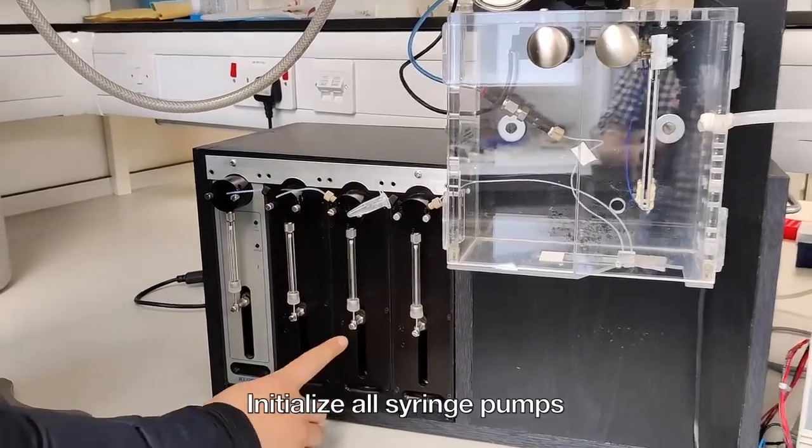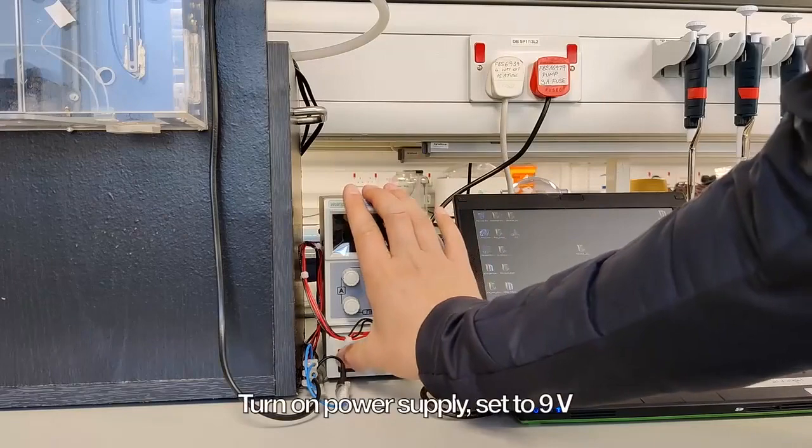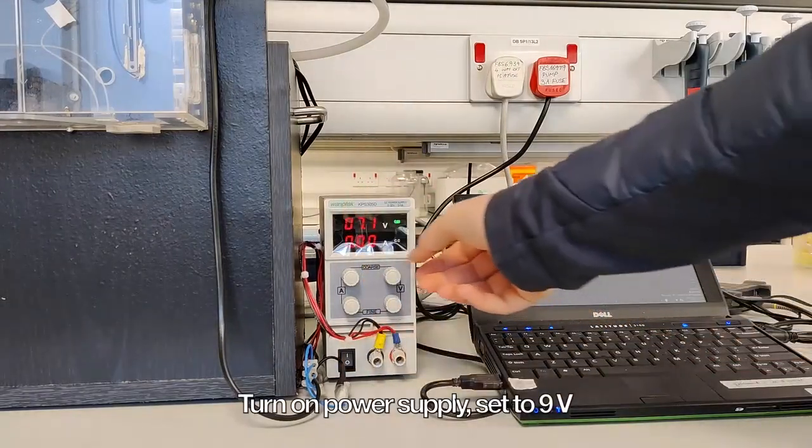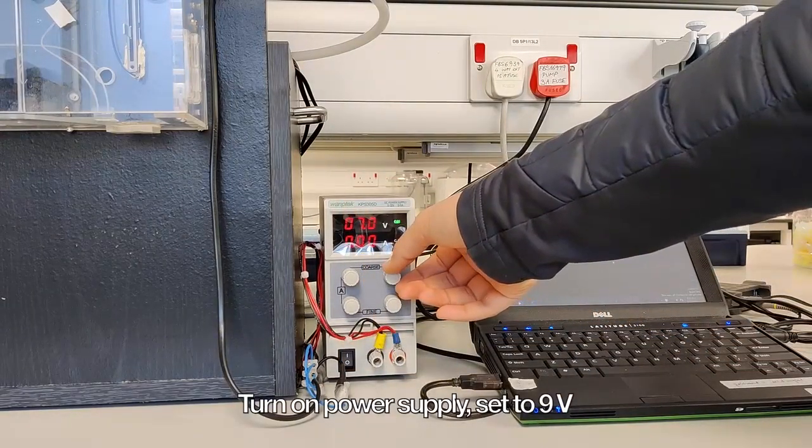Initialize all syringe pumps by pressing the initialize button on each syringe pump. Turn on the potentiometer power supply, set it to 9 volts, and start the oscilloscope control software.